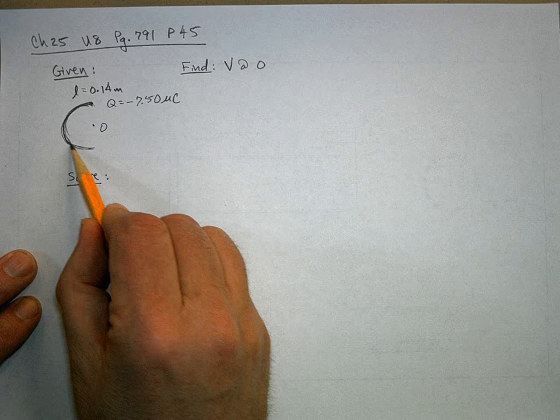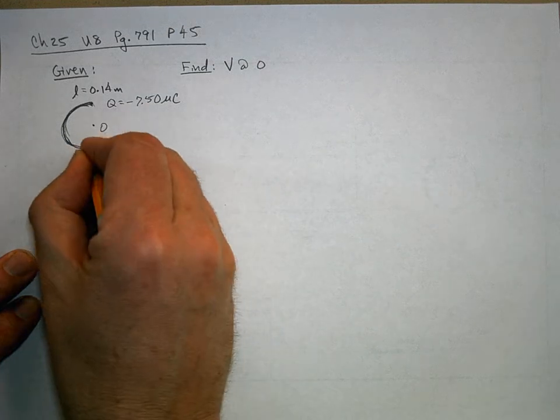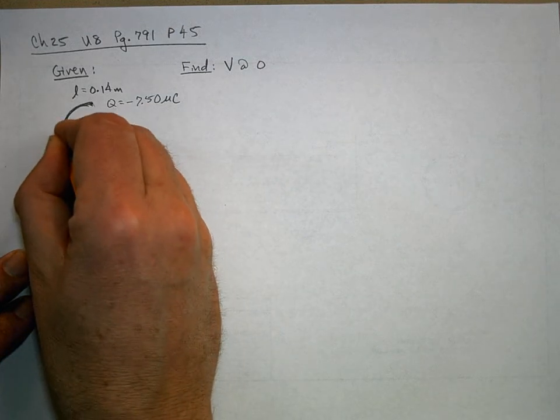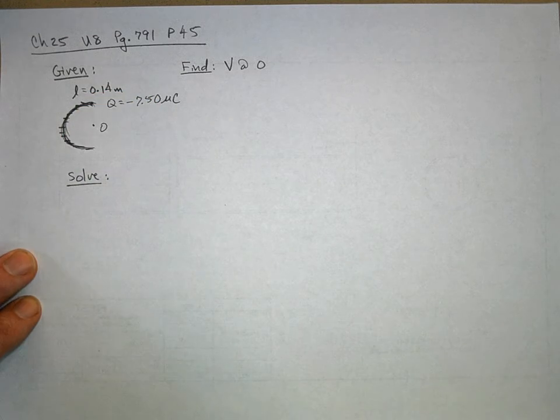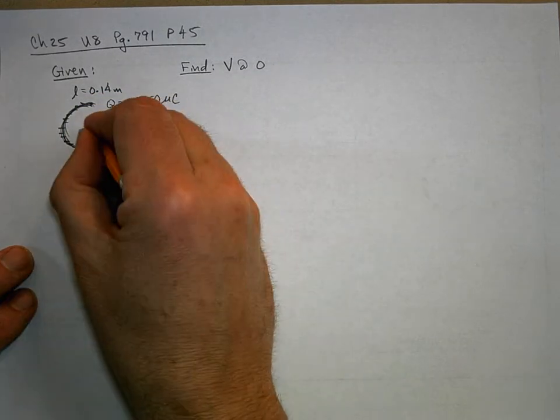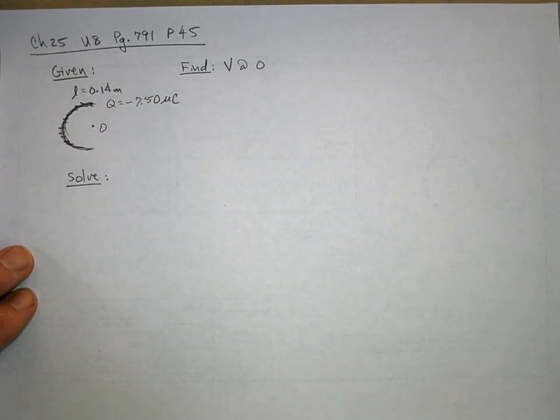Here's our semicircle with all this negative charge. I'll draw these little negatives uniformly distributed over its length, and we want to know what's the voltage right there.